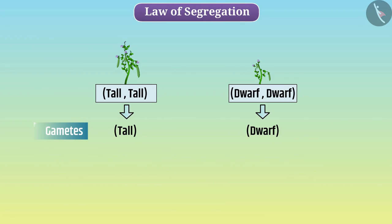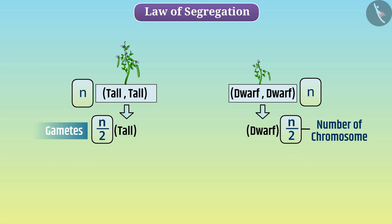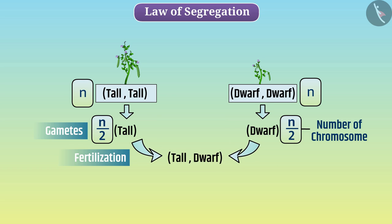During the formation of gametes, alleles get separated — each gamete gets only one of the two alleles in pure form. In this way, the number of chromosomes in gametes is half that of the other cells. At fertilization, the alleles of the male gametes pair again, and thus the number of chromosomes becomes normal.